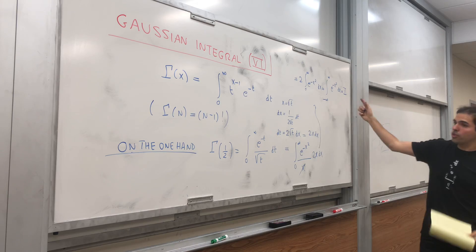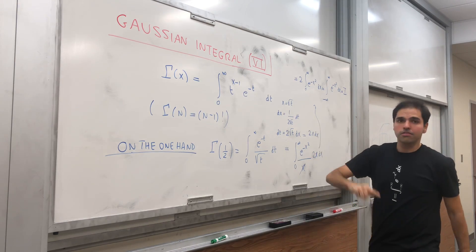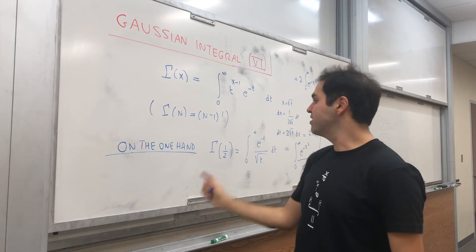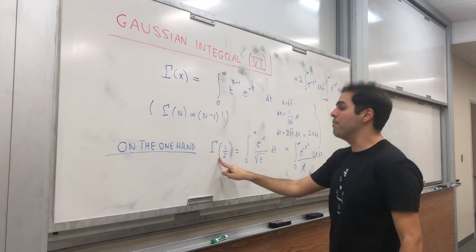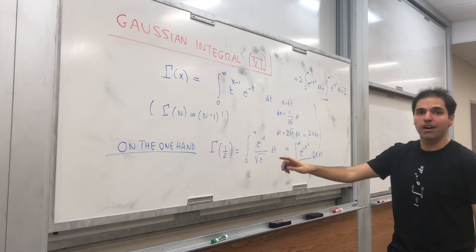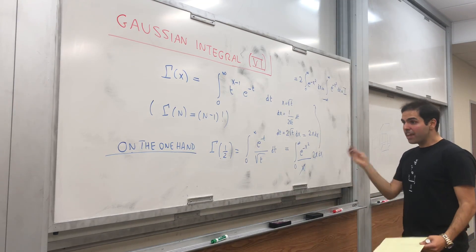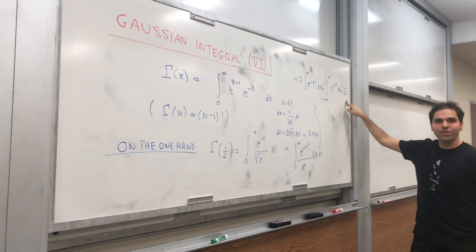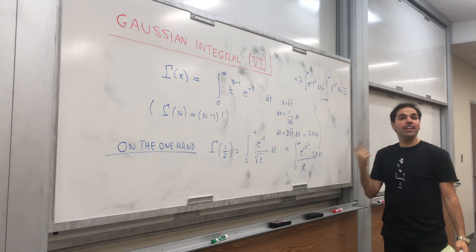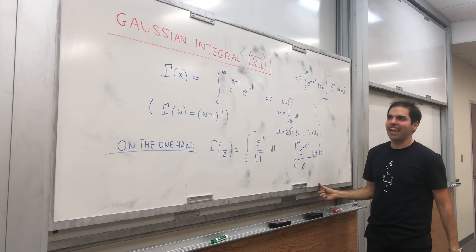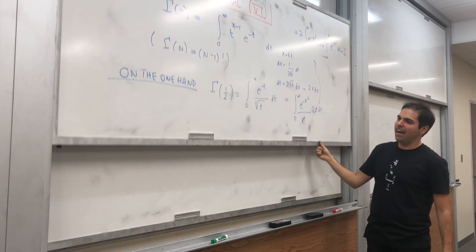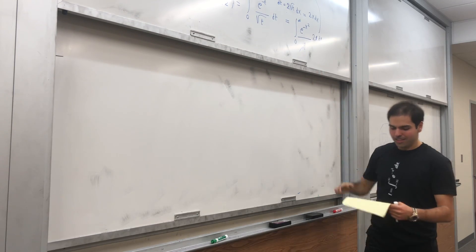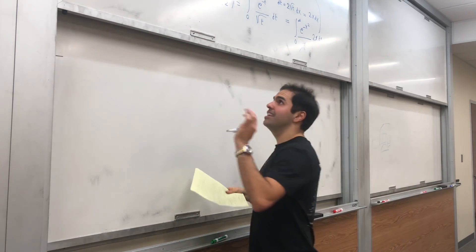So it turns out our Gaussian integral is nothing else than gamma(1/2). And therefore, to calculate the Gaussian integral, let's find another way of calculating gamma(1/2).